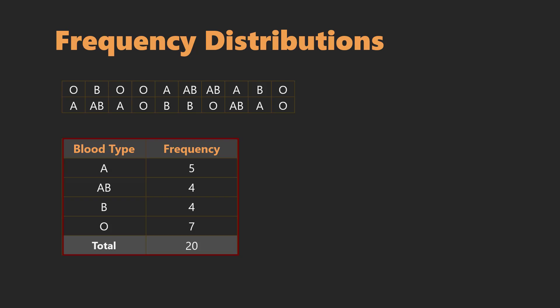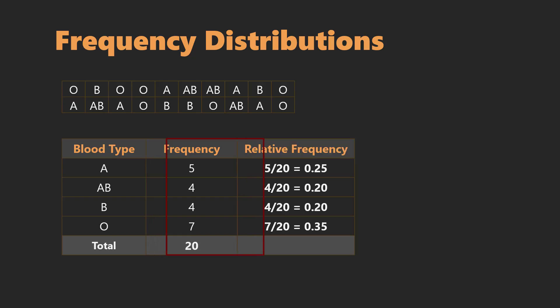To have a frequency distribution, we need the categories, or groups, or classes, or intervals, and the frequency of occurrence of these intervals. We can extend this to relative frequencies by dividing each frequency by the total frequency. Relative frequencies can be expressed as decimals or as percents, and they should add up to 1 or 100%.